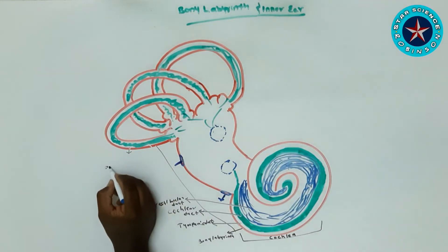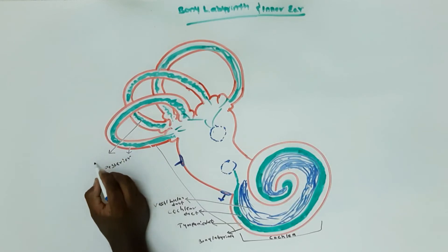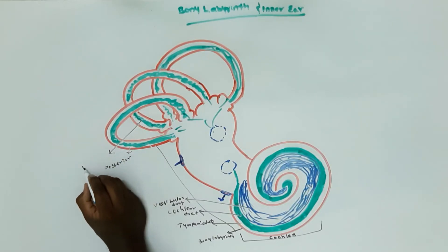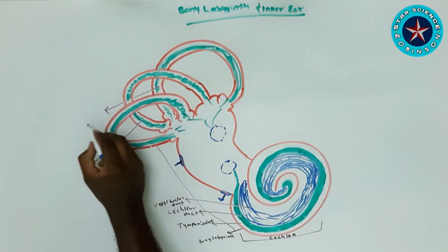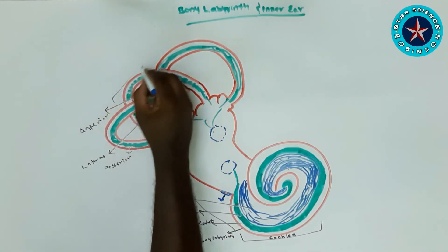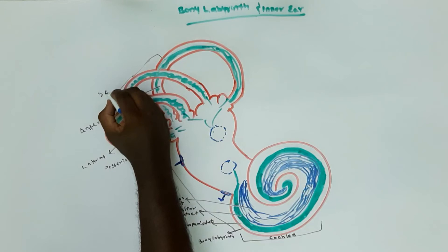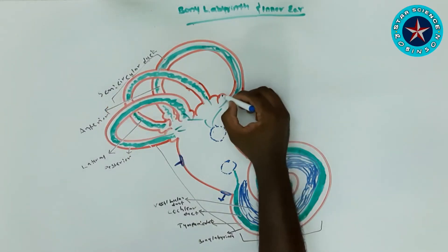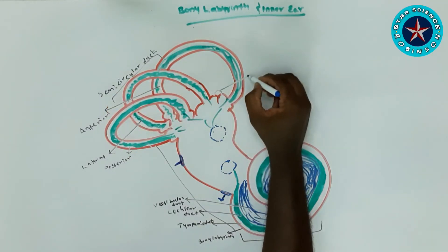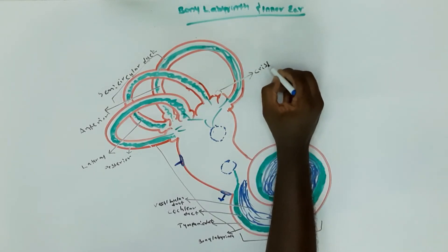In our diagram, this particular portion is the posterior tube of the semicircular canal, this is the lateral tube, and this portion is the anterior or superior tube of the semicircular canal. Together these are called the semicircular canal, and inside is the semicircular duct, which has sensory epithelial hair cells.